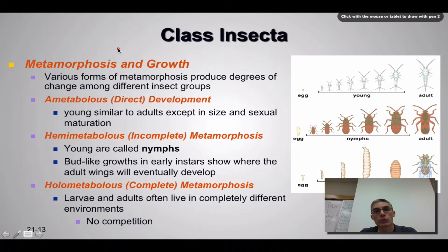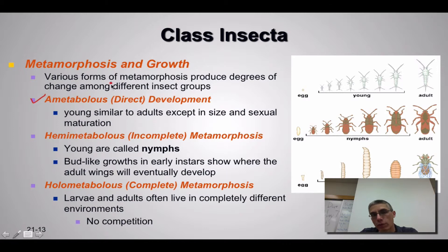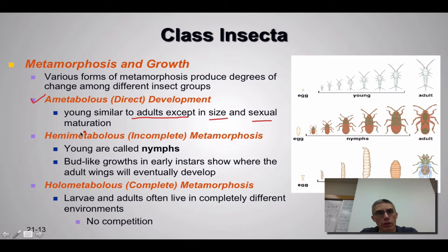The last topic is metamorphosis and growth. These animals often have interesting reproductive strategies, and we place them into three groups. The first is ametabolous, which is simply direct development — the young that hatch are very similar to the adults, with the only differences being size and sexual maturation. The example shown here illustrates an insect that goes through ametabolous development: once it hatches from the egg, there is really only an increase in size.